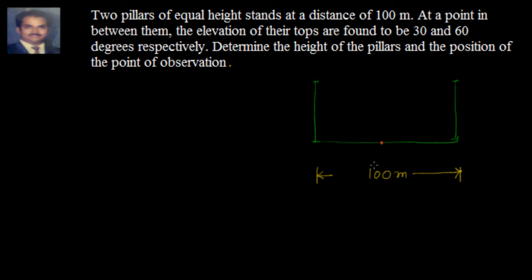The elevation of their tops, so from here, if I look at this pillar and I look from here at this pillar, the elevation of their tops are found to be 30 degrees and 60 degrees. So let's say this angle is 30 degrees and this angle is equal to 60 degrees. We know that this is a right angle, this is a right angle.